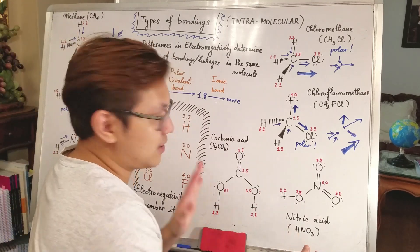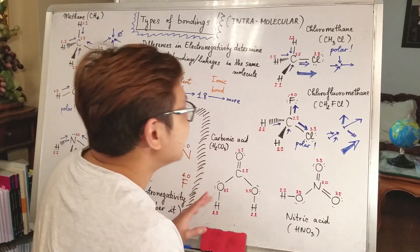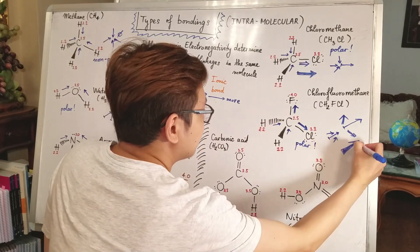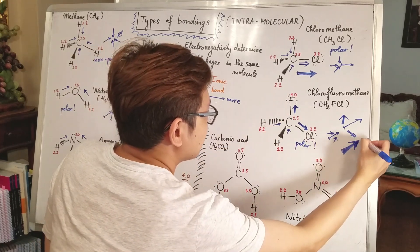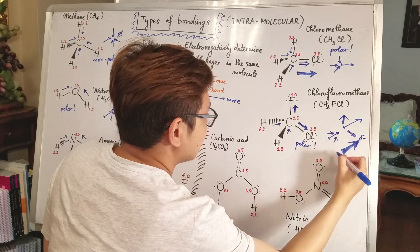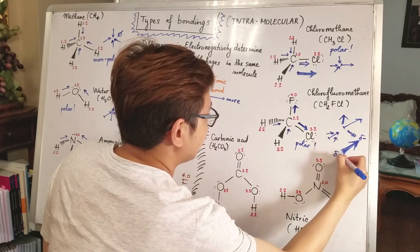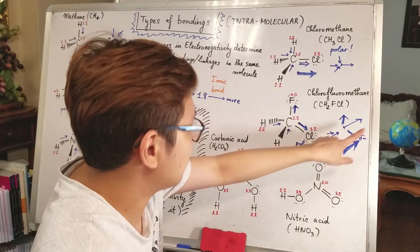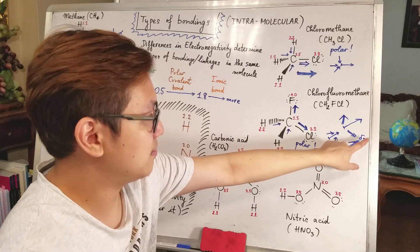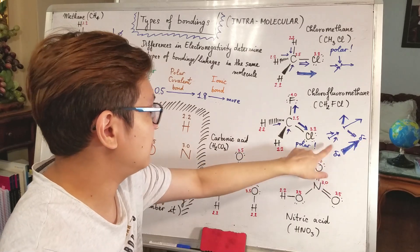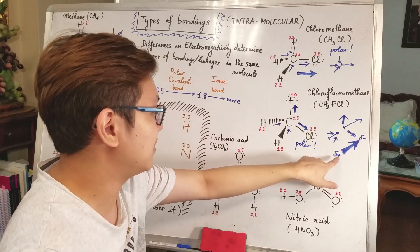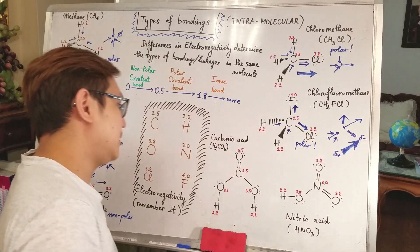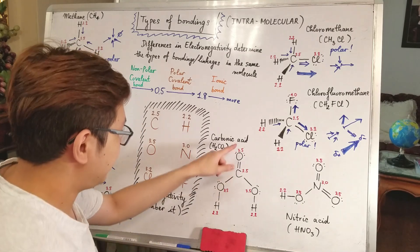One important note: if the net dipole vector points in a certain direction, it means electrons are moving that way — making that end more negative (partially negative, δ–) and the other end more positive (partially positive, δ+). So more electron density accumulates on one side and less on the other.